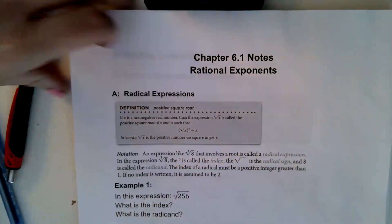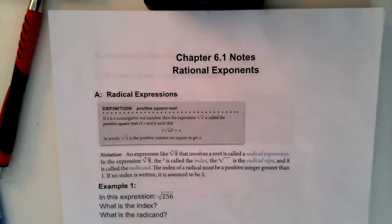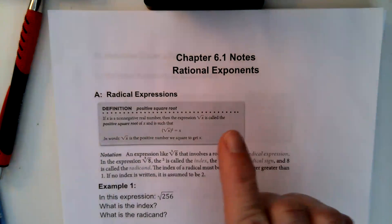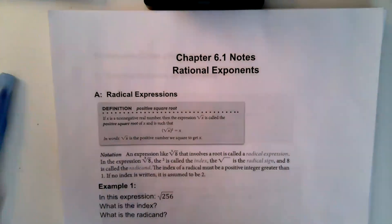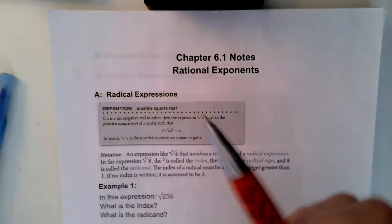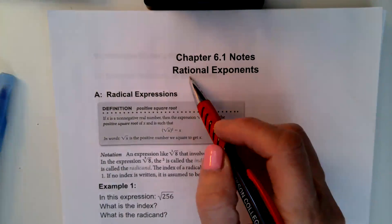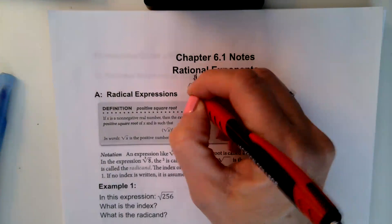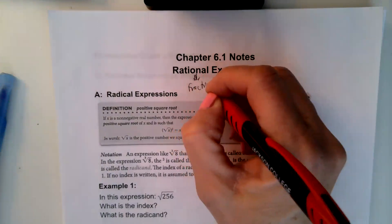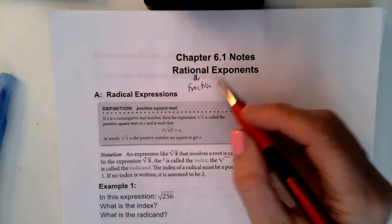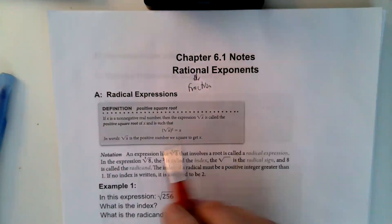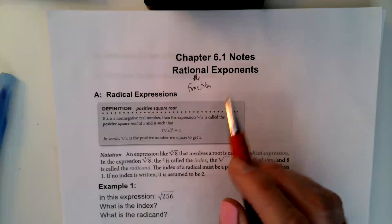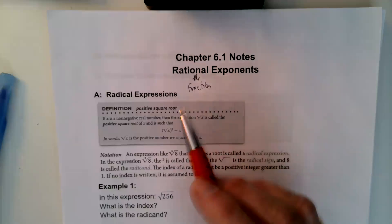Welcome back. Today we're going to start chapter 6. Chapter 6.1 is all about rational exponents. We've talked about rational expressions — rational meaning fraction. So we have exponents that are fractions, and we can write what we've always known as a root in exponent form.